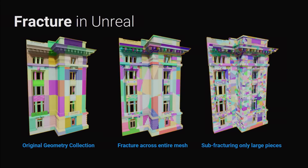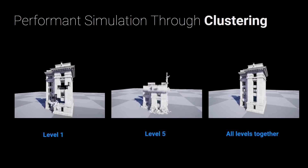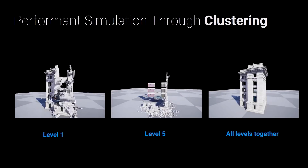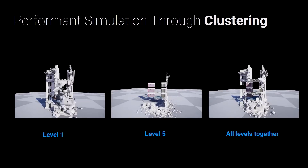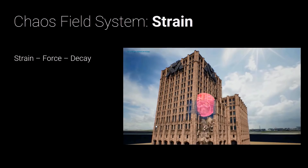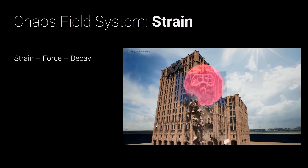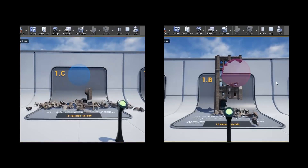Once you have your geometry collection, inside the fracture editor you can choose the type of fracture to perform and the settings used to perform that fracture. Clustering and performance is a way of collecting how the fractures will behave and to what extent. These can be further combined to increase more dynamic results. The field system within the Chaos Destruction tools is a way of directly affecting a physics simulation by occupying a region of space with varying parameters, in order to produce different behaviors or breakage effects.